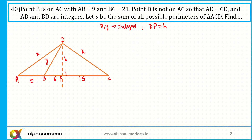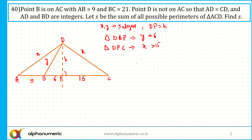What are the different possibilities? In triangle DBP, Y must be greater than 6 because it is the hypotenuse. Similarly, in triangle DPC, DC equals X which is the hypotenuse, and the hypotenuse must be greater than 15 since PC equals 15. So X must be greater than 15.